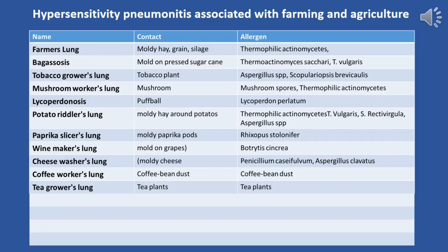Hypersensitivity pneumonitis is associated with farming and agriculture, leading to various specific conditions including farmer's lung, bagasosis, tobacco grower's lung, mushroom washer's lung, lycopertinosis, potato riddler's lung, paprika slicer's lung, winemaker's lung, cheese washer's lung, coffee worker's lung, and tea grower's lung.